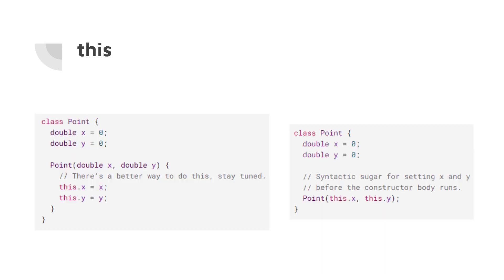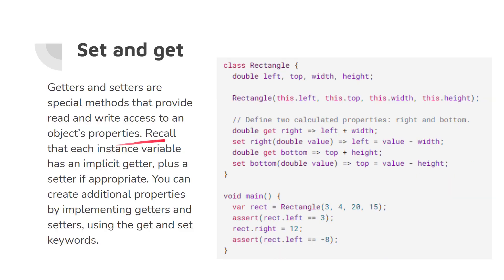The 'this' keyword is used when you have a constructor in your class and the names of variables and constructor parameters are the same, to prevent confusion. You say this.x — meaning this class's variable x equals the parameter x. In Dart we can write this.x and this.y in the constructor, which is equivalent to the explicit assignment form.